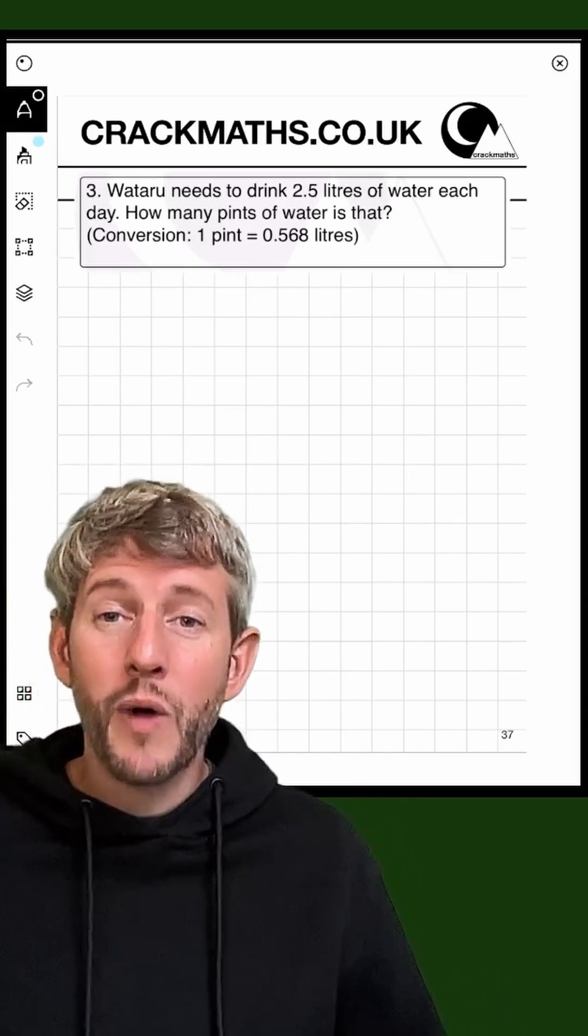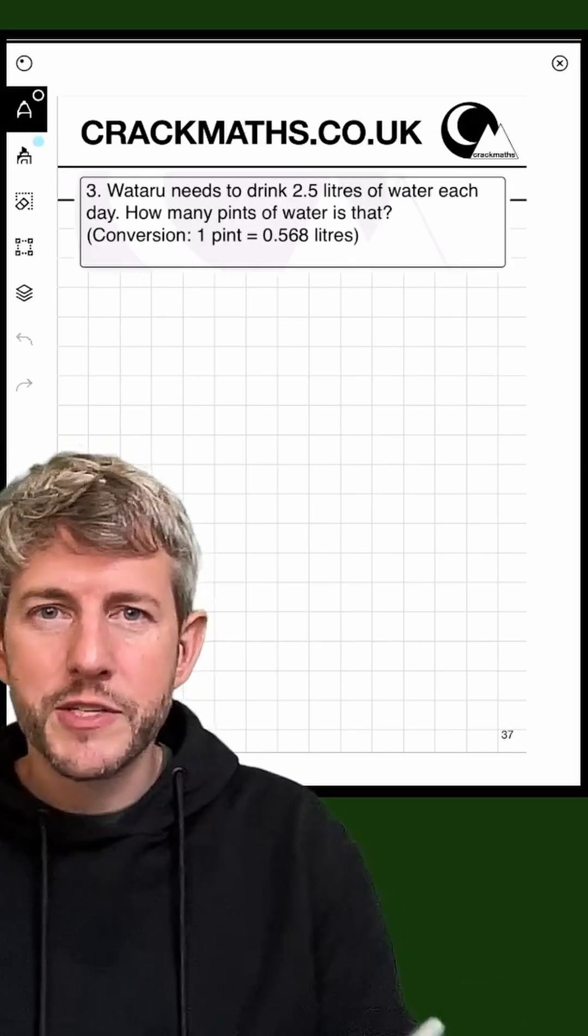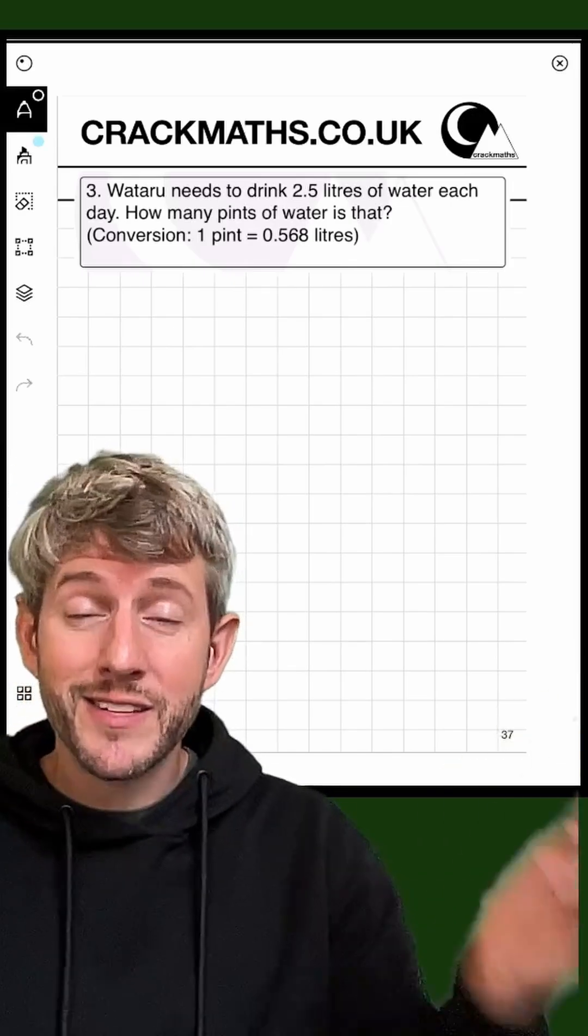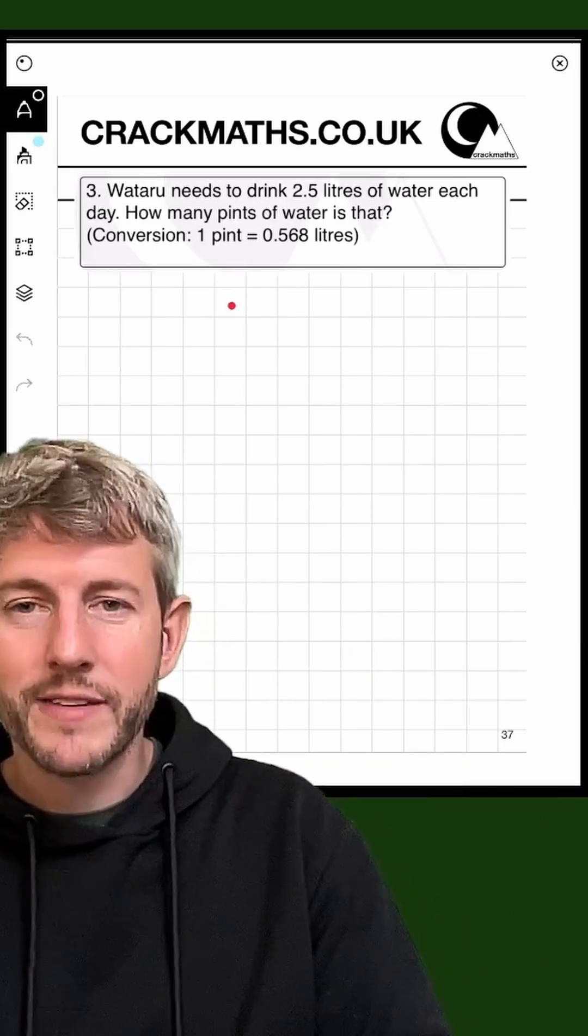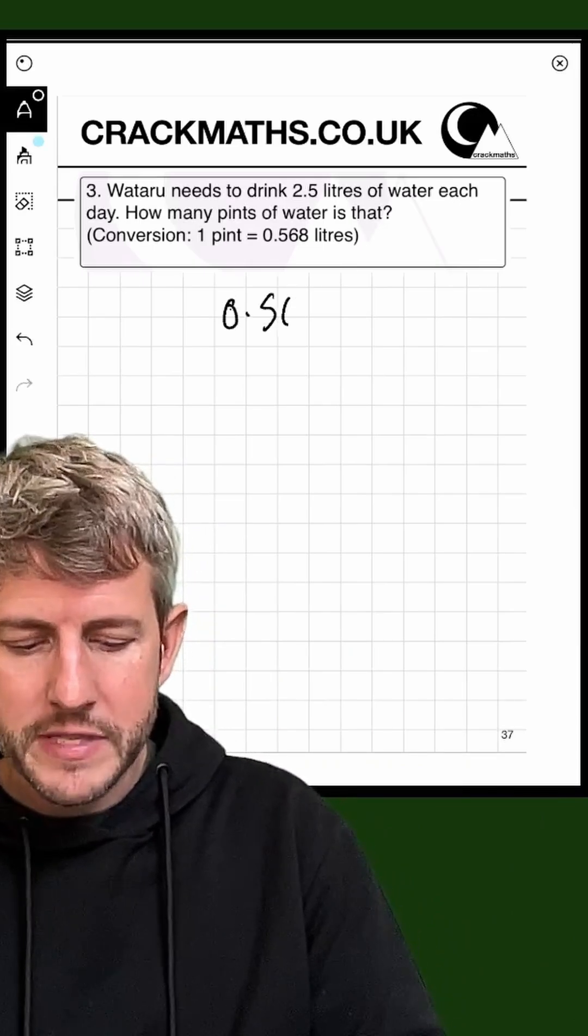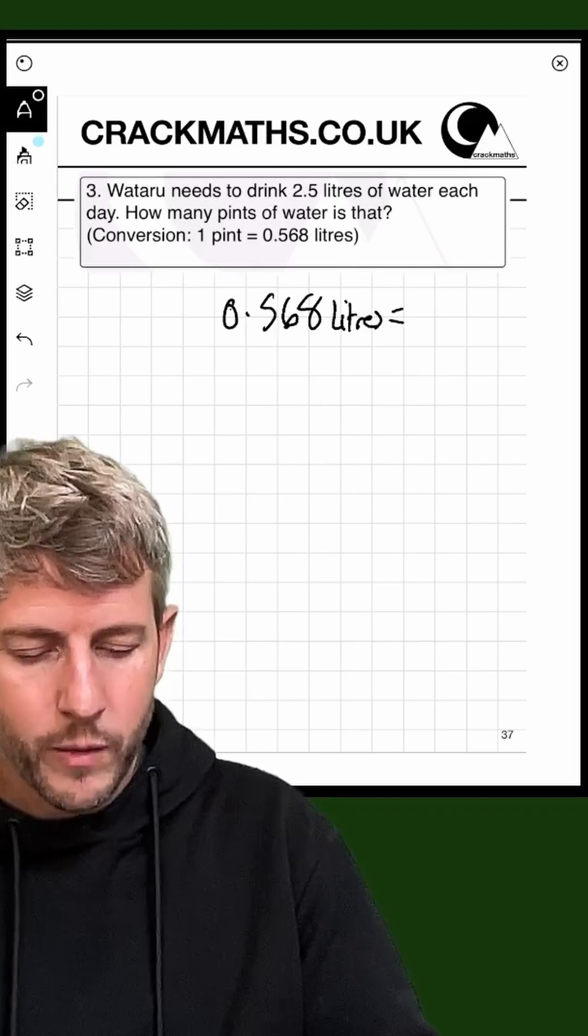First of all, I'm going to write the conversion down, but I'm going to write down the litres on my left because that's what I'm going to be playing around with. So 0.568 litres equals one pint.